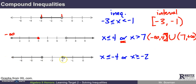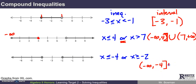For the last compound inequality example, going from negative infinity to negative 4 including negative 4, in union with negative 2 up to positive infinity including negative 2, the interval notation is (-∞, -4] ∪ [-2, ∞).